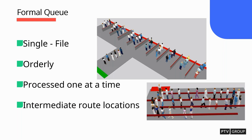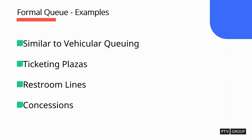Formal queuing is more single-file and orderly — pedestrians are processed one at a time. Examples include TSA, airport security, grocery store checkout lines, or bank tellers. You might have one or several queue locations, but everyone is essentially being processed single-file. Similar to vehicular queuing, other examples include ticketing plazas, restroom lines, and concession stands at larger events.